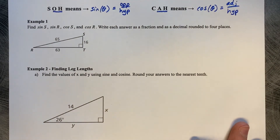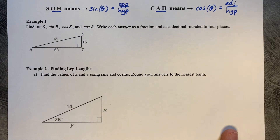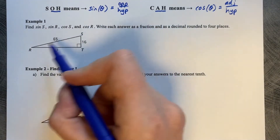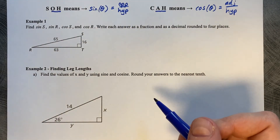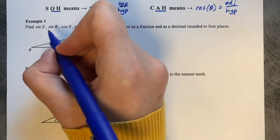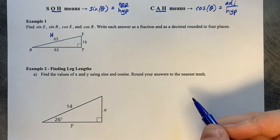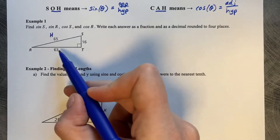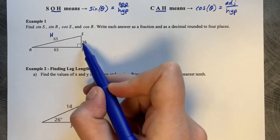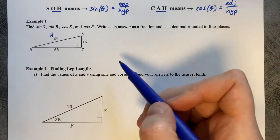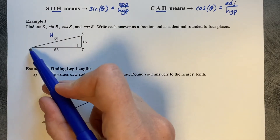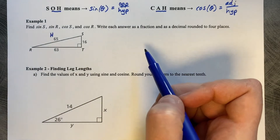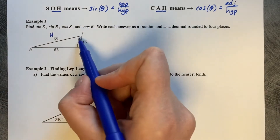Example 1: Find the sine of S, sine of R, cosine of S, and cosine of R. Write each answer as a fraction and as a decimal rounded to four places. 65 will always be our hypotenuse. But 16 and 63 will switch from being opposite and adjacent based on which angle you're referencing. If you reference angle S, then 63 is opposite. If you reference angle R, then 16 is opposite.